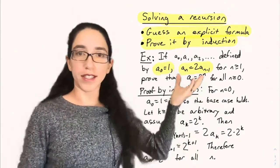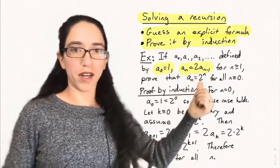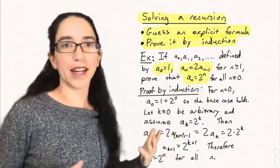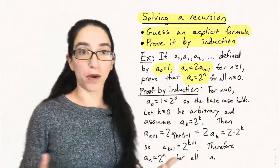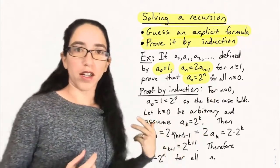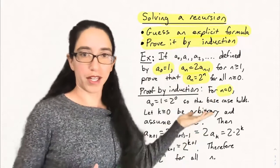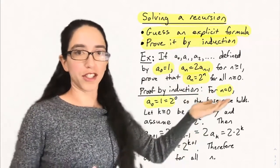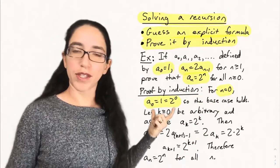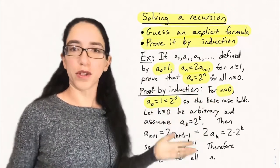For instance, in this case where we had a₀ equals 1 and aₙ equals 2 times aₙ₋₁, it looks like aₙ is 2 to the n for all n — it's the nth power of 2. And so we can prove this by induction. In general, we can prove explicit formulas for recursions by induction by starting with the base case, showing that it holds for n equals 0, and that's basically showing that it matches the initial condition: a₀ equals 1, which is 2 to the 0. So the base case does hold.